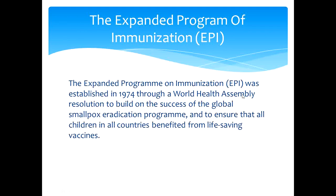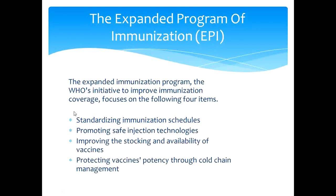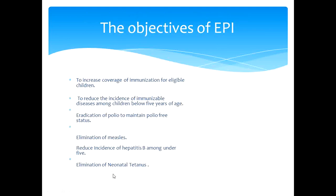EPI is the Expanded Program of Immunization. It was established in 1974 through a World Health Assembly. The WHO initiative focuses on four items: standardizing immunization schedules, promoting safe injection technologies, improving the stocking and availability of vaccines, and protecting vaccine potency through cold chain management.